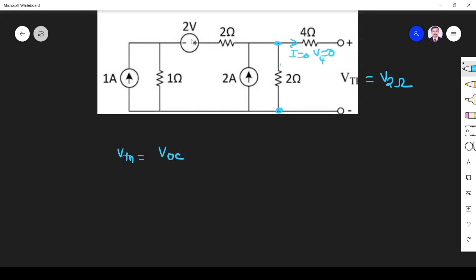First what we do since we have both current source and voltage source I will first transform this current source into voltage source. So 1 ampere into 1 ohm, this is R. So V is equal to I into R. So I do source transformation. So this is 1 volt. When you transform the resistor will come in series, 1 ohm. Then here 2 volt.